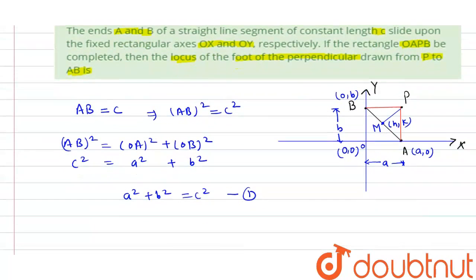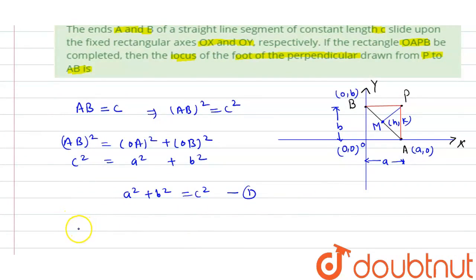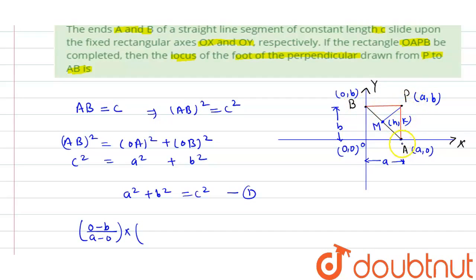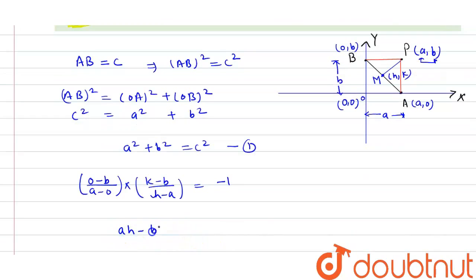Line PM and AB are perpendicular to each other, so the product of their slopes equals −1. The slope of line AB is (0 − b)/(a − 0). The coordinates of point P are (a, b), because P and B share the same y-coordinate and P and A share the same x-coordinate. The slope of line PM is (K − b)/(H − a), and the product equals −1. On simplifying, we get AH − BK = A² − B². This is equation 2.